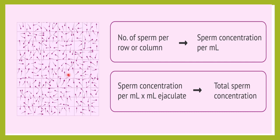That is all about the sperm count, its symptoms, and the related terminologies. In the next class we will concentrate on the causes of oligospermia and azoospermia, so we can find the cause and treat patients through lifestyle changes, medications, or surgeries to improve the sperm count. Thank you so much for watching — please like, share, and subscribe to the channel.